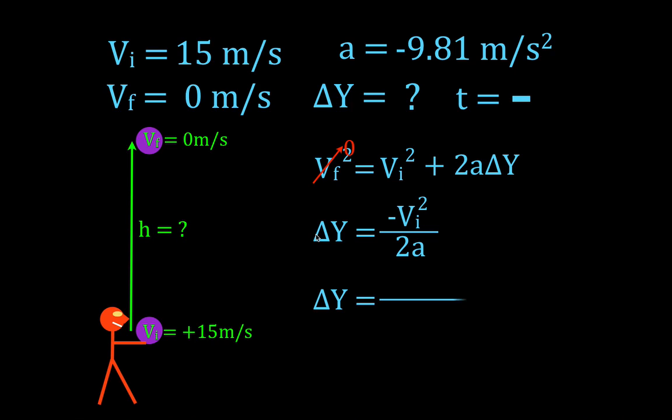And now I can simply plug the values in. That means that the height of the ball, delta y, is going to be equal to minus 15 meters per second squared, divided by 2 times the acceleration, which is 2 times minus 9.8. Now you can see we have a minus on the top, a minus on the bottom. We're going to divide this. We're going to get a positive number, so that's good that we get a positive answer.